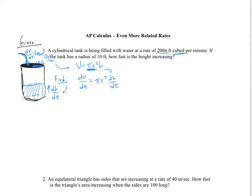Now we can substitute values in. dV/dt was told to be 200 pi. We have pi, the radius is 10, and we square that. Solving for dh/dt, 200 over 100 gives us dh/dt = 2 feet per second.